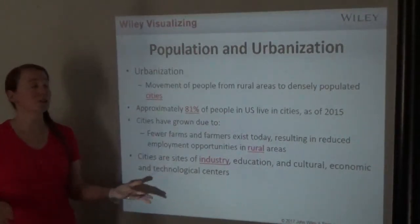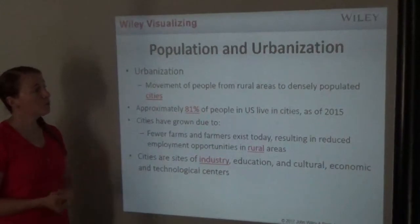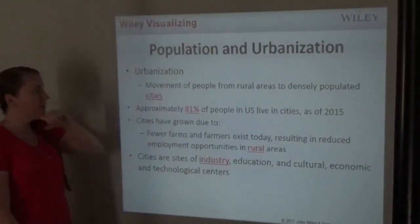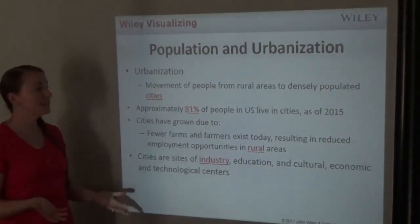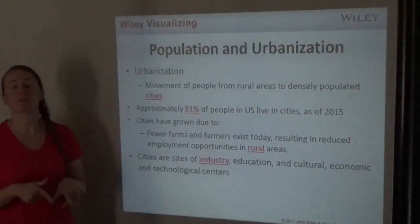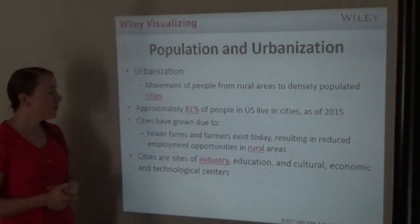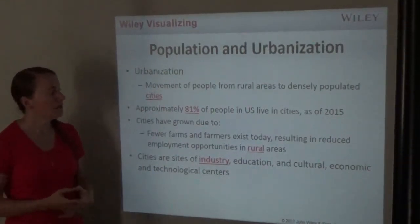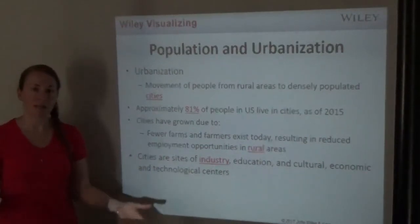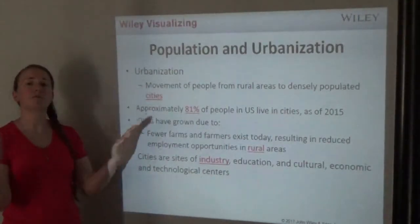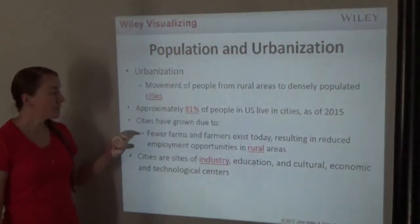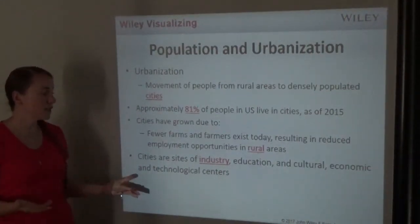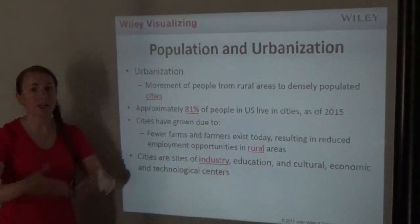The last topic in this chapter is urbanization — the movement of people from rural areas to densely populated cities. Approximately 81% of people in the United States live in cities as of 2015. Cities have grown because fewer farms and farmers exist today, reducing employment opportunities in rural areas. As farming becomes more efficient and requires fewer workers, people move to cities, which are centers of industry, education, culture, economics, and technology.